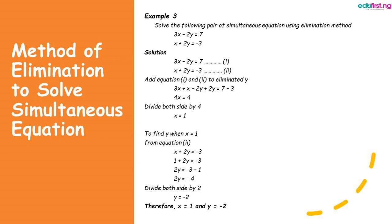Now that we have a value for x, we can easily find y by substituting the value of x in equation 2. We have x plus 2y equal to minus 3, so 1 plus 2y equal to minus 3. Making y the subject, we have minus 3 minus 1, which is minus 4, divided by 2, and we have y equal to minus 2. So for this example, x is 1 and y is minus 2.